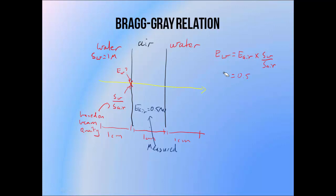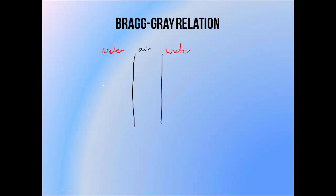If the electron stopping power in water was 1 MeV per centimetre and the stopping power in air was 0.5 MeV per centimetre, the amount of energy deposited in water would be equal to the 0.5 MeV measured in our air volume, multiplied by 1 over 0.5, which gives us a value of 1 MeV absorbed in the water. The first Bragg-Gray condition has to do with the applicability of the stopping power ratio. Stopping powers vary with electron energy, so if the secondary electrons crossing the ion chamber don't change energy very much, then the stopping power ratio will be the same everywhere inside the air volume. But if the electrons lose a significant amount of energy as they cross the air volume, we can't just apply this simple stopping power ratio to get our dose to water.